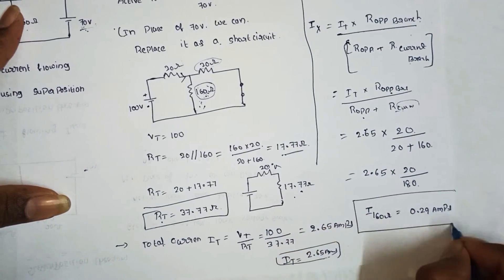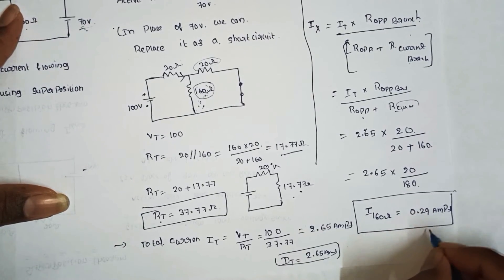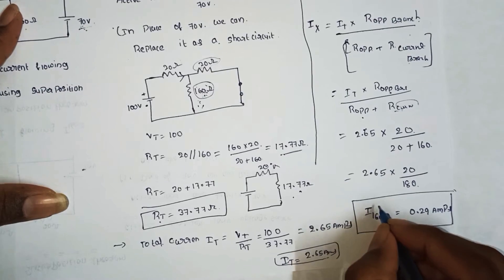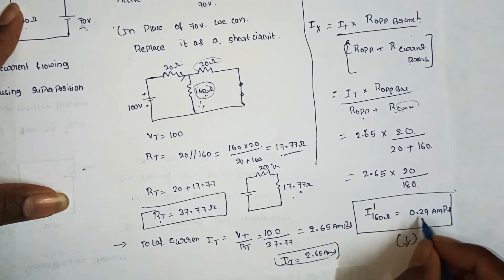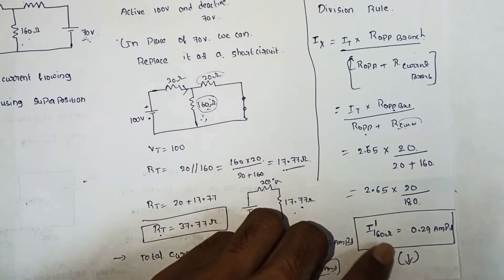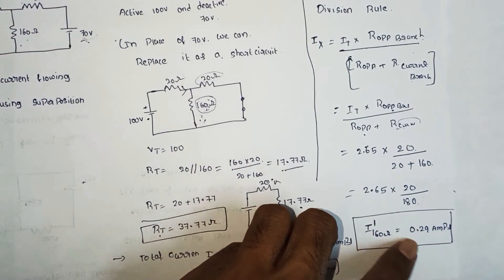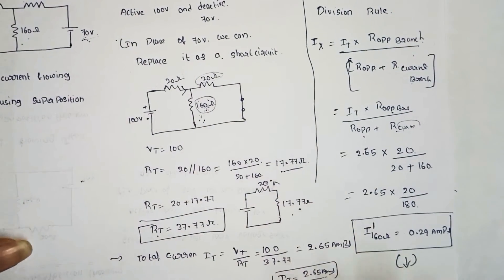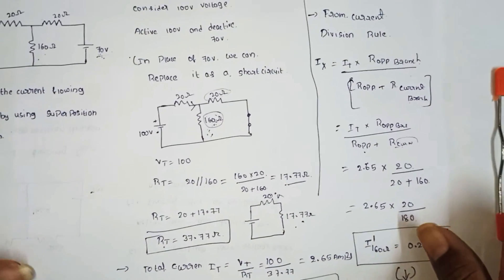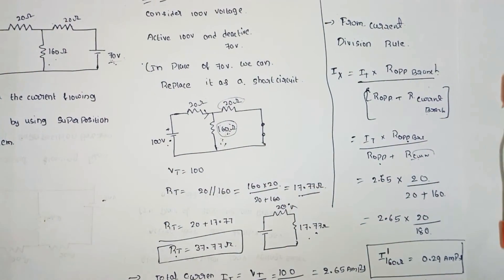This current is in the downward direction. So we denote I dash 160 ohms equals 0.29 amps. Step 1 is complete — we activated 100 volts and deactivated 70 volts. Next we consider step 2.